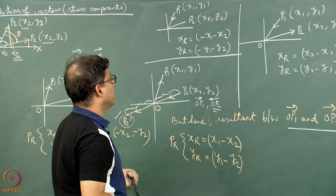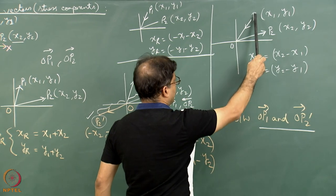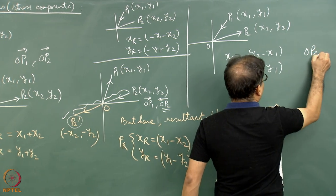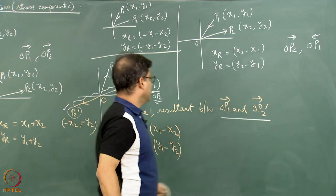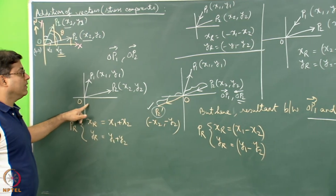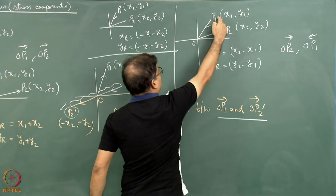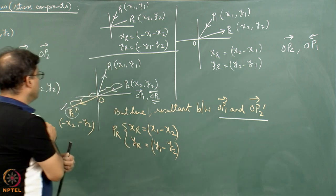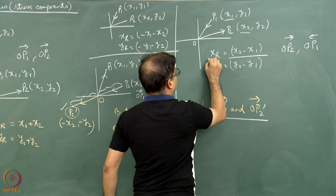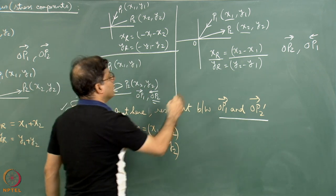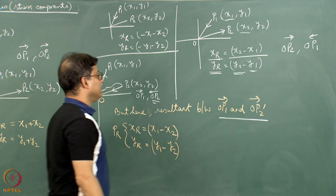To explain a similar situation once more: suppose OP2 stress acts in one direction and OP1 acts in another direction. Here OP2 and OP1 are considered where the direction of one stress is clearly different. In one case O to P1 is the direction of action, whereas in the other case P1 to O is the action of stress. So in that case the resultant coordinate will be given by x2 minus x1 for the x-coordinate and y2 minus y1 for the y-coordinate.